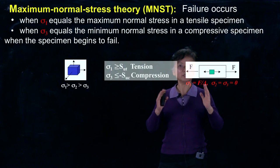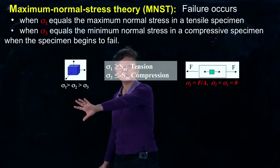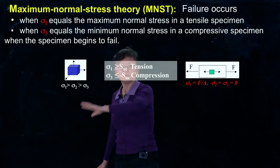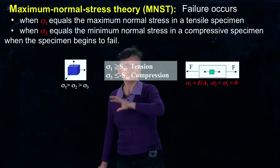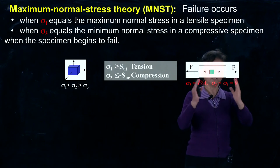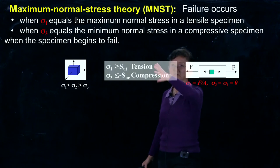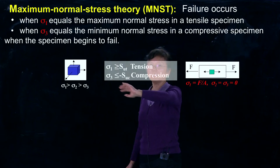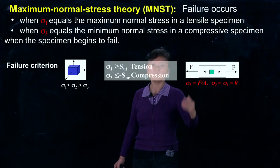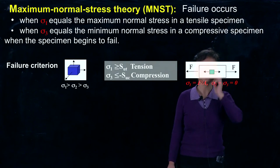On the other hand, if the whole thing is under compression, if σ3, which is the most negative one, equals or is even further negative than the compressive stress in the uniaxial loading case when failure happens, then failure occurs. Basically, we use σ1 and σ3 as the criteria for failure. This is the failure criteria.